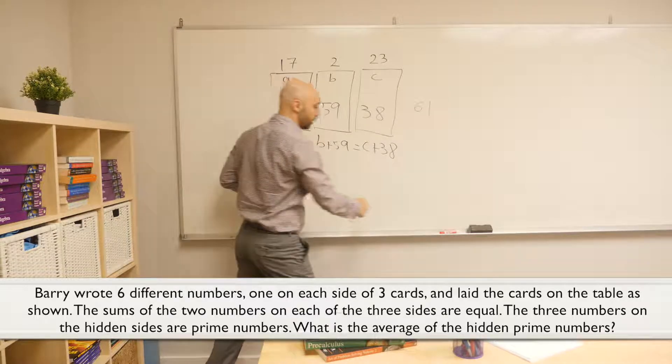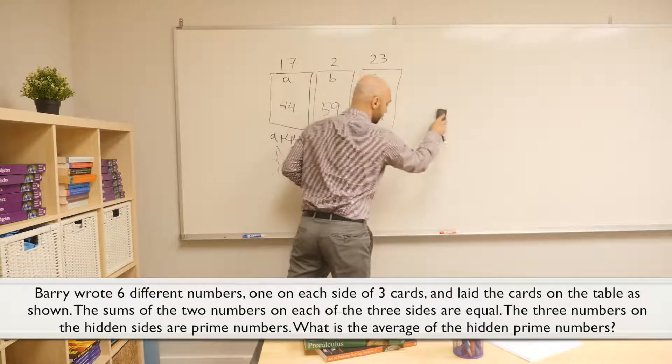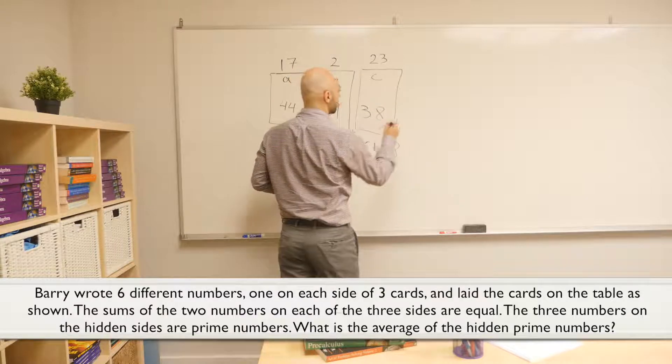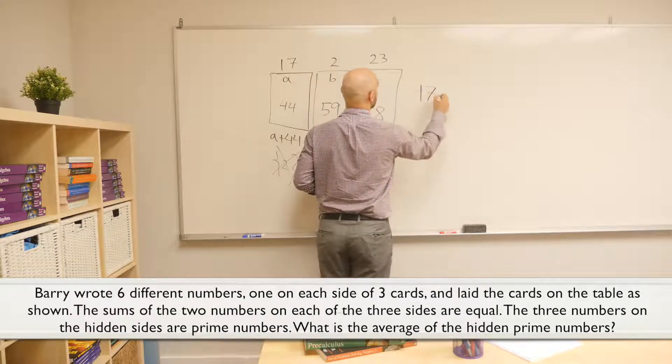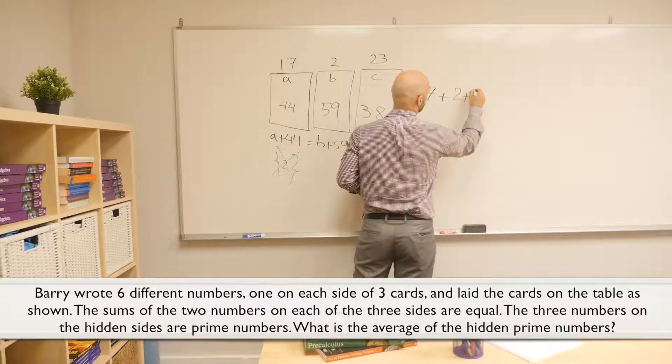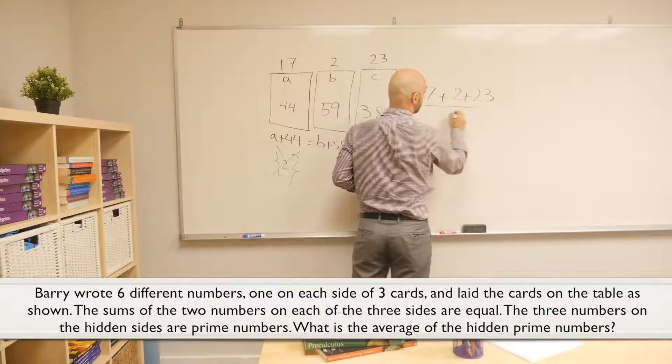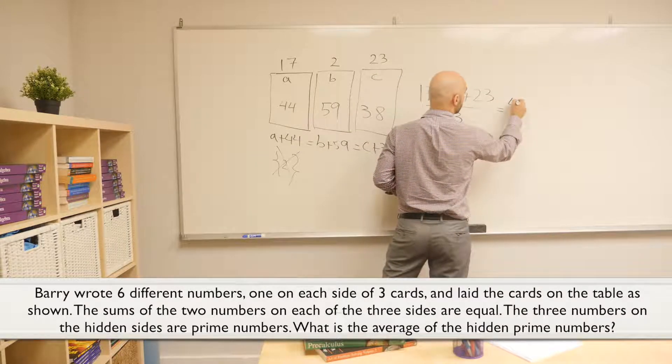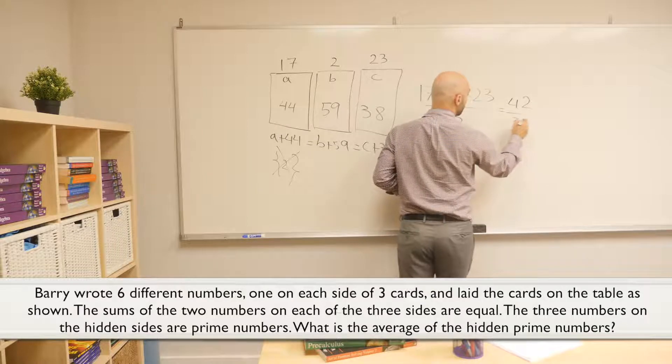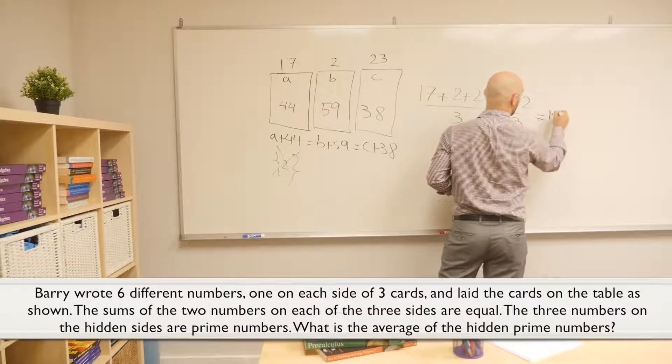Now, the problem is asking for the average of those prime numbers. Just add them all. Dividing by the number of terms, we get 42 divided by 3, and we get 14.